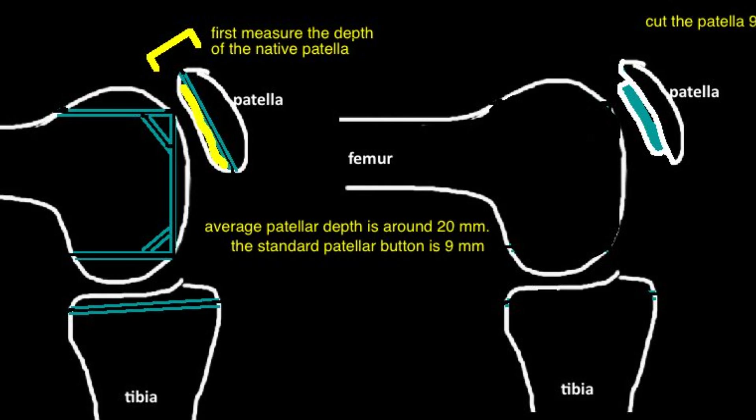Patellar resurfacing is not required in knee replacements and is not the standard in many countries, though it is standard in the United States. Across most device companies, the standard thickness of the patellar button is 9 mm, so the standard patellar cut should also be 9 mm. Measure the depth of the native patella, subtract 9 mm, and set the patellar cutting guide to that number. If the average patellar depth is 20 mm, the cutting guide is set to 11–12 mm, though many surgeons set it to 14 mm to avoid cutting the patella too thin, as there is an increased risk of fracture when the residual native patella is less than 12 mm. The standard prosthetic design uses three pegs, which carries a lower risk of fracture compared to the single-peg design.